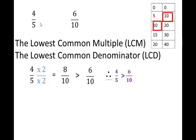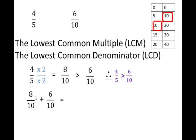To add 4 fifths plus 6 tenths: remember, 4 fifths in equivalent form with a denominator of 10 can be written as 8 tenths. So I write 8 tenths plus 6 tenths as my equation. We have learned that if our denominators are the same, we simply add the numerator alone: 8 plus 6 is 14. The denominator stays the same — we don't say 10 plus 10 is 20. So 8 tenths plus 6 tenths is 14 tenths. The denominator does not get added.